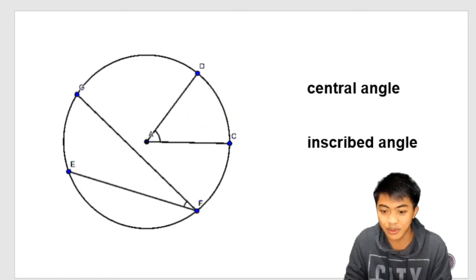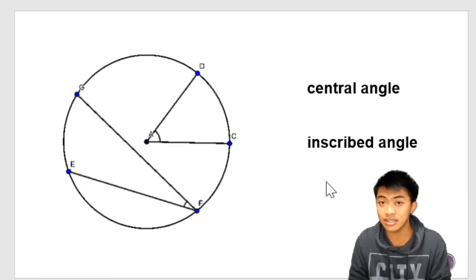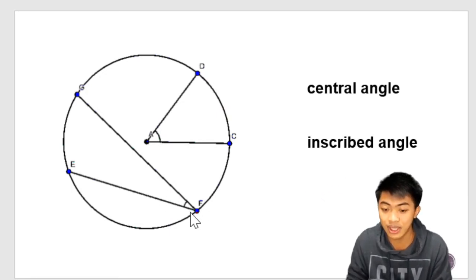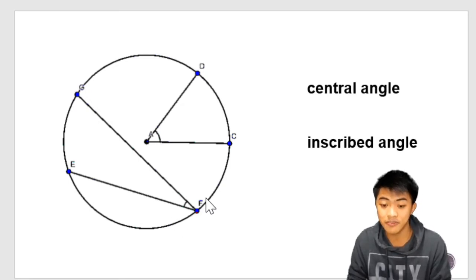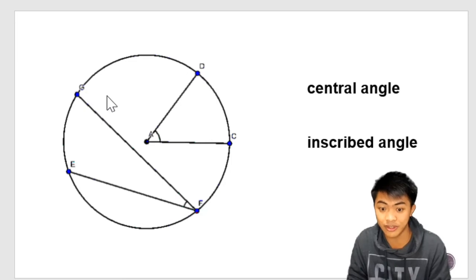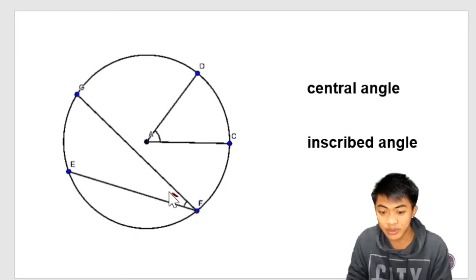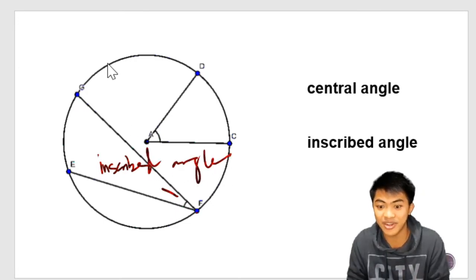We also have the so-called inscribed angle. And these are angles whose vertex is located on the circle itself. And the sides of an inscribed angle are chords of the circle. So this one here is the inscribed angle. Sorry for that handwriting.